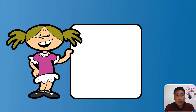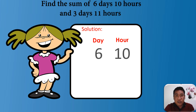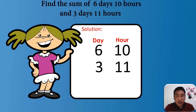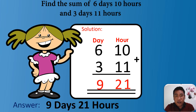For our second example, find the sum of six days, 10 hours and three days, 11 hours. For our solution, let's write the two units, days and hours. Then let's write six days, 10 hours and three days, 11 hours, and the add sign. First, we add the hours: 10 plus 11 equals 21. Next, the days: six plus three equals nine. For our final answer, we have nine days, 21 hours.